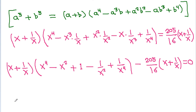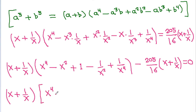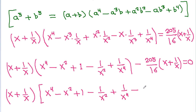We can factor out x plus 1 by x, giving x plus 1 by x times x power 4 minus 205 by 16 is equal to 0.